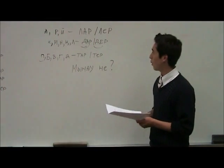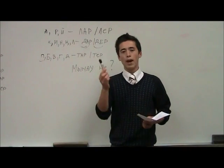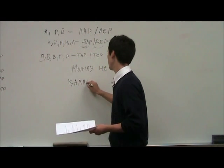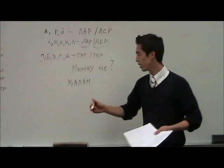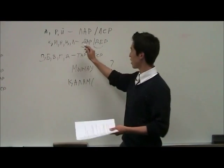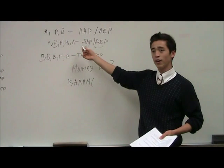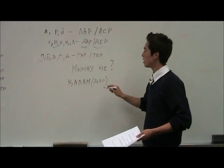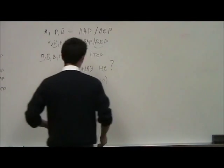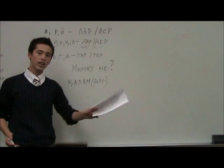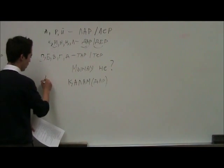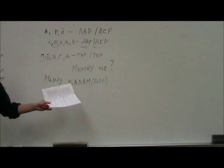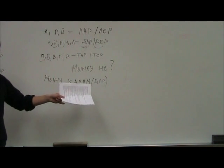The word pen is 'kalam'. Kalam is a pen. If you want to say these are pens, what is the ending? It ends with m, so we add the plural ending dar — 'kalamdar'. So if your kid asks, manau nia? You may answer: manau kalamdar. This means these are pens.